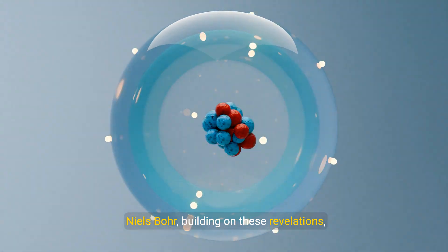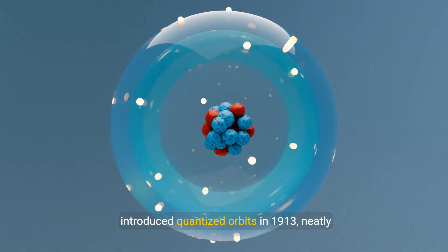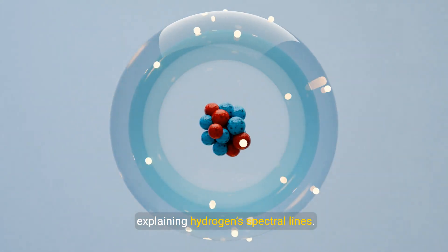Niels Bohr, building on these revelations, introduced quantized orbits in 1913, neatly explaining hydrogen's spectral lines.